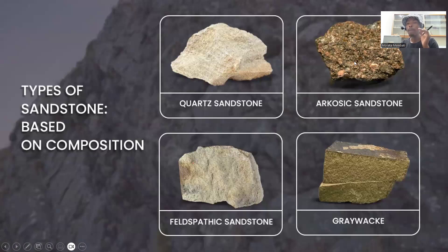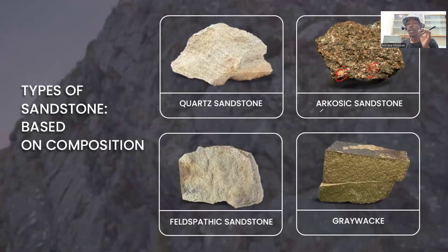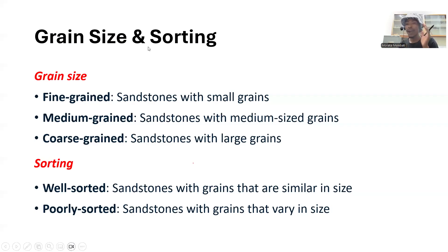This is an arkosic sandstone — it has more feldspar. You can see these pinkish grains are dominant, which is why this is called an arkose. This rock contains at least 25 percent feldspar. Then when classifying sandstone according to grain size and sorting: when we say something is well sorted it means it contains grain sizes of almost equal size, but when it is poorly sorted it contains a wide range of grain sizes.